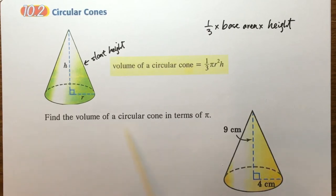Find the volume of a circular cone in terms of pi. So this is the cone we have to find its volume.